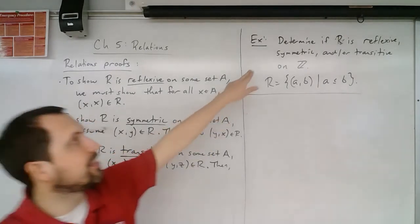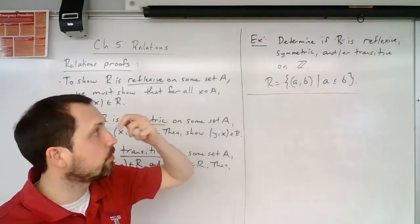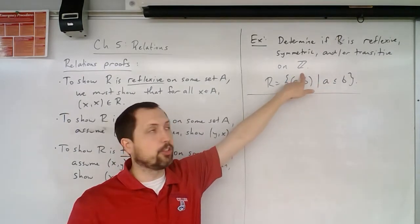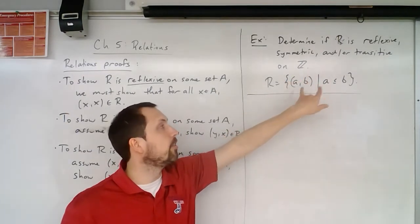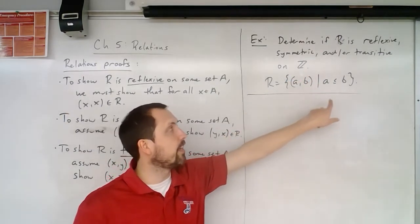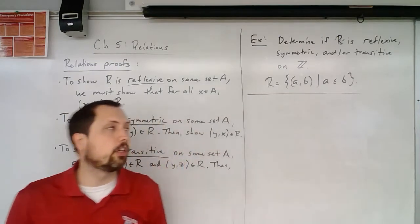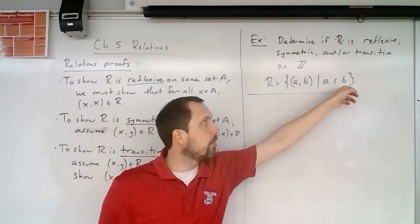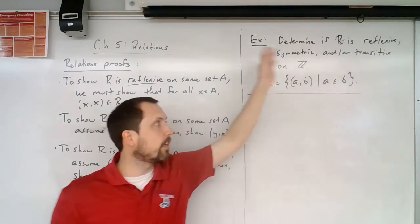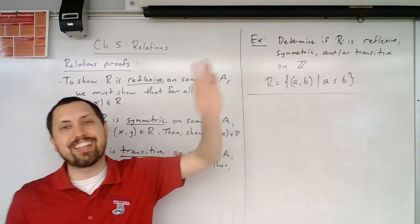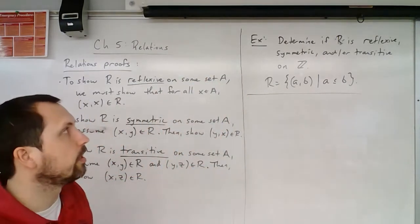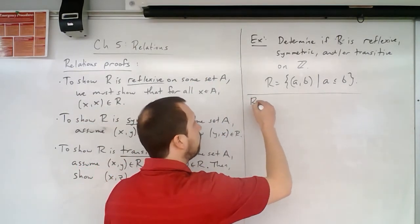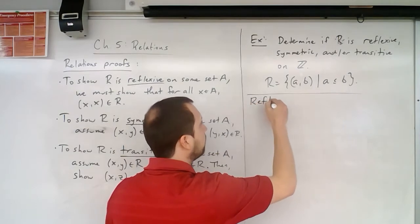So if we take a look at this example — we define a relation on the set of all integers where a number is related to another as long as the first is less than or equal to the other, i.e., the ≤ relation.